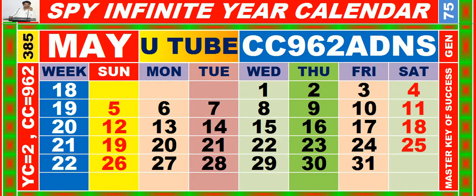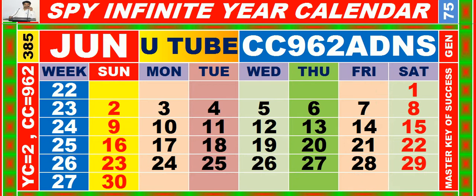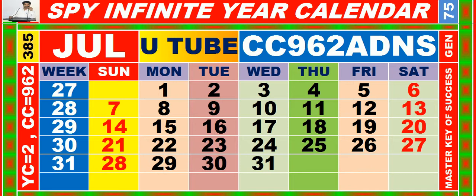Calendar for the month of June, having calendar code equal to 962. Calendar for the month of July, having calendar code equal to 962.